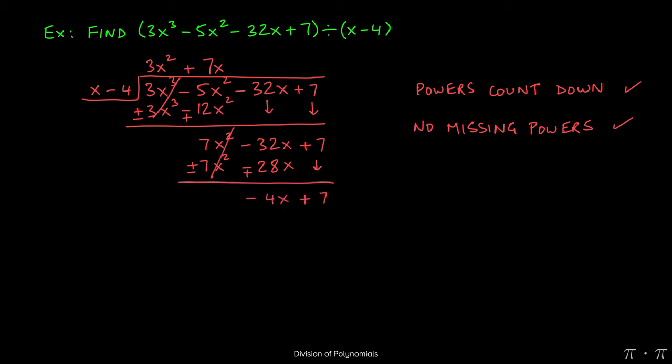Now we combine like terms to recognize 7x squared minus 7x squared cancels out. Negative 32x plus 28x yields a negative 4x, and then the 7 just gets brought down.